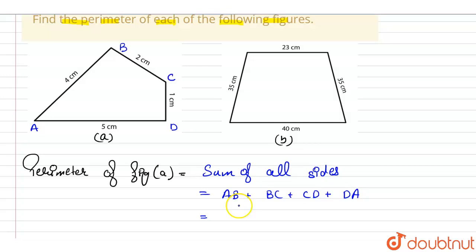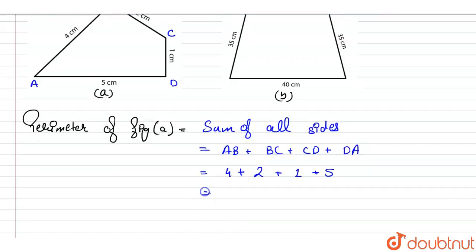So this will be equal to the length of AB is 4 centimeter, the length of BC is 2 centimeter, the length of CD is 1 centimeter, and the length of AD or DA is 5 centimeter. So if we sum them up, this will be 4 plus 2 is 6, 6 plus 1 is 7, and 7 plus 5 is 12. So we have got the perimeter as 12 centimeters. So the perimeter of the given figure, that is figure A, is 12 centimeter.